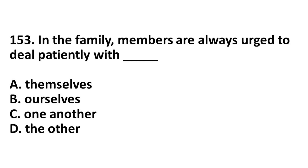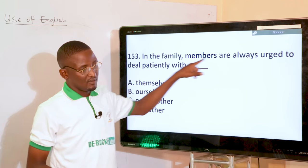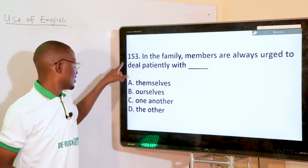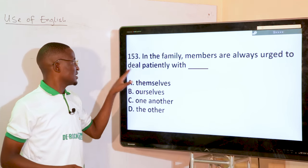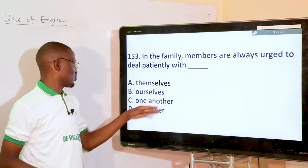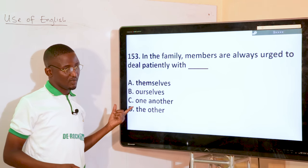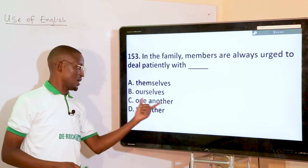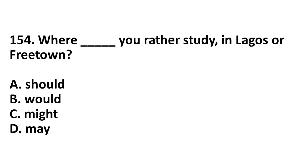In the family, members are always urged to deal patiently with dash. We are talking about more than two people here — so 'deal patiently with one another.' We are talking about more than two, so we have the reciprocal pronoun 'one another.'